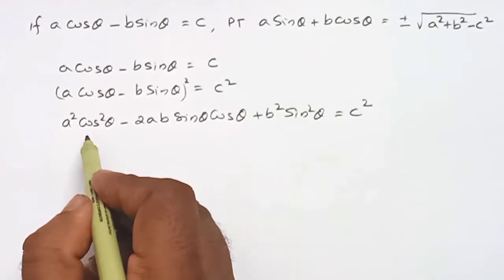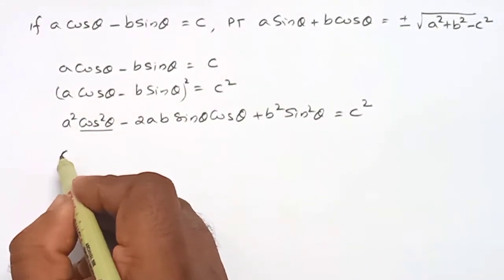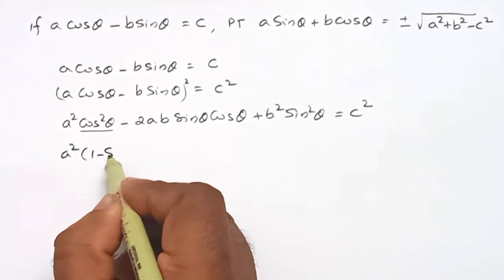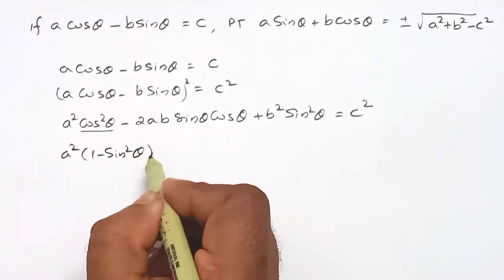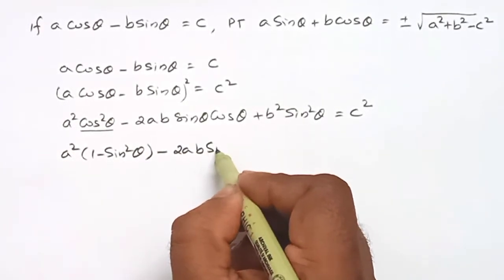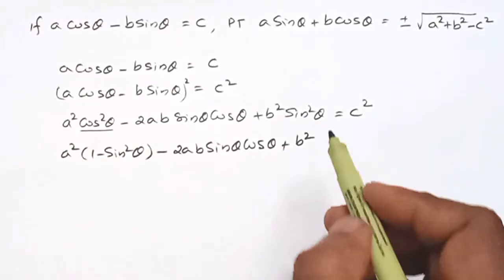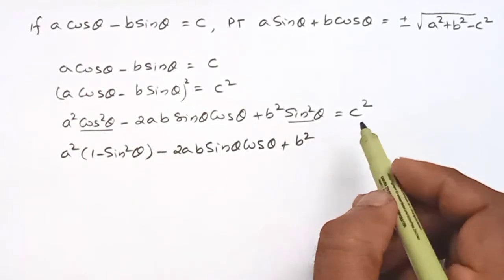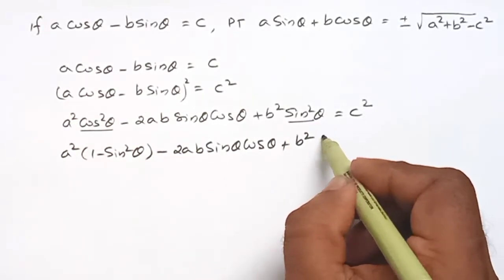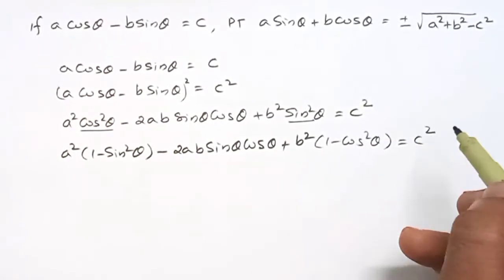We can replace cos squared theta by 1 minus sin squared theta. That is, A squared into 1 minus sin squared theta minus 2AB sin theta cos theta plus B squared, where sin squared theta can be replaced by 1 minus cos squared theta, giving 1 minus cos squared theta is equal to C squared.